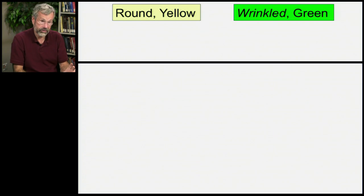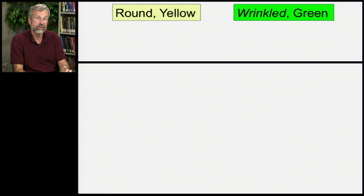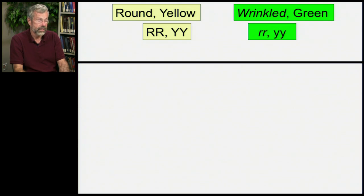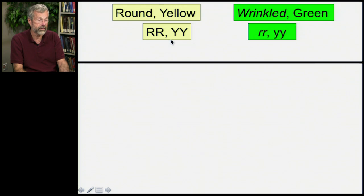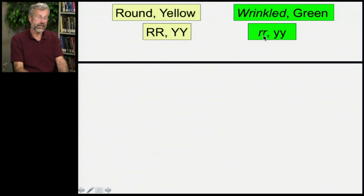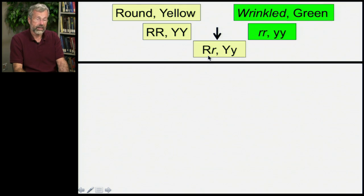So let's go back and look at what we're doing with a dihybrid cross. The parental phenotypes are round yellow and wrinkled green. Now we'll look at this in terms of genotype. It's a pure breeding line, so it's homozygous capital R to be round and homozygous capital Y to be yellow. The other parent is homozygous little r for wrinkled and homozygous little y for green. We cross them and our F1 generation is now a double heterozygote.